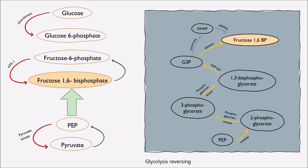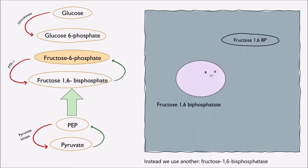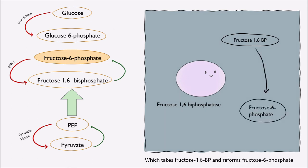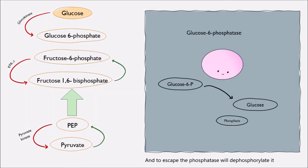Glycolysis is reversed, skipping a bunch of enzymes until we reach PFK1, which cannot be reversed. Instead, we use Fructose-1,6-bisphosphatase, which takes Fructose-1,6-bisphosphate and reforms Fructose-6-phosphate. Fructose-2,6-bisphosphate and AMP deactivate this enzyme.